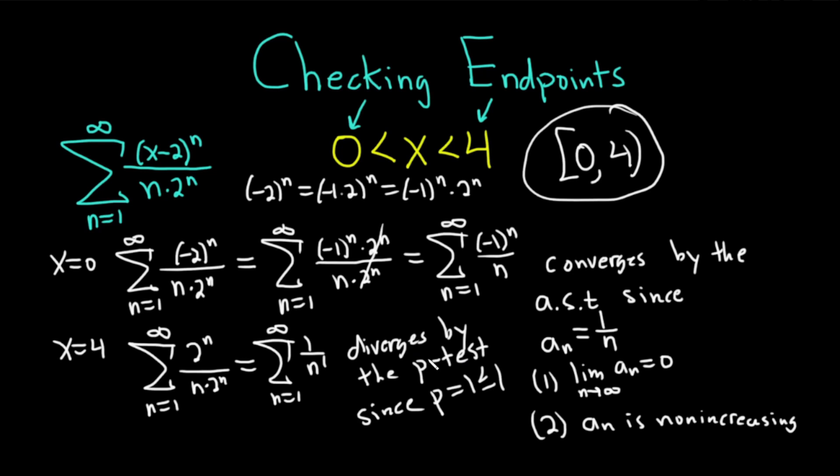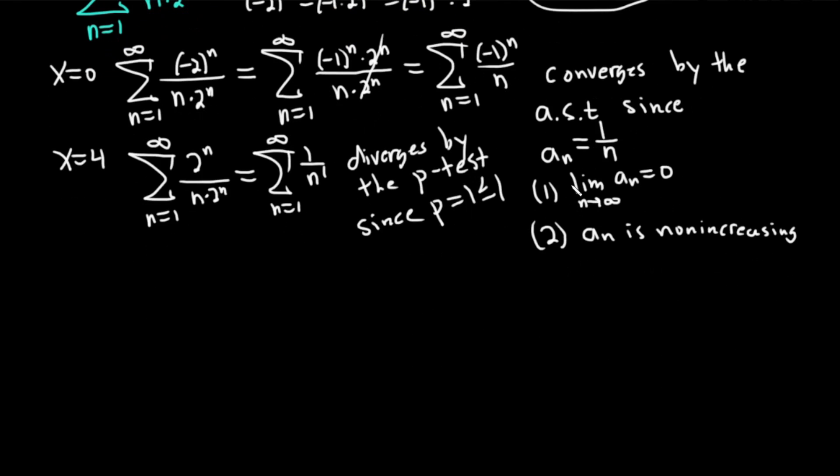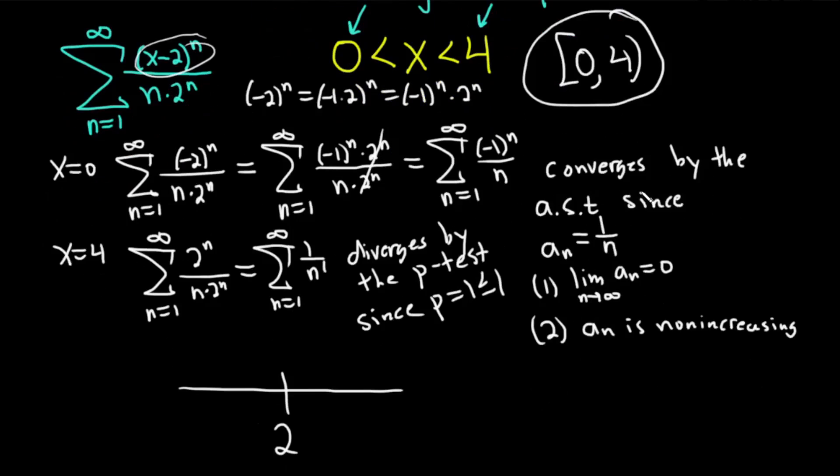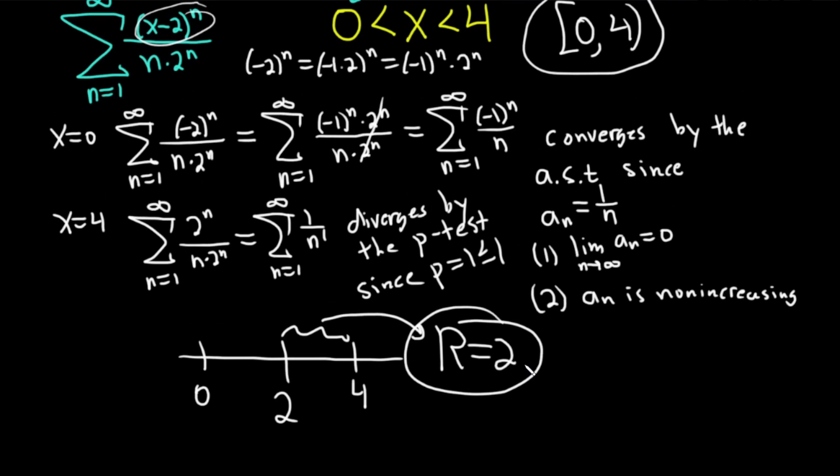Whether or not you have to justify these depends on what you're doing, but I like justifying them and writing everything out. Now we just have to find the radius. The center of the series is 2. You can tell because it says x minus 2 in the original problem. So 0 is one endpoint and 4 is the other. The radius is the distance. The distance is 2. The radius of convergence is 2.